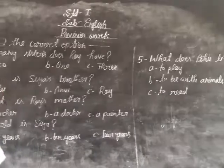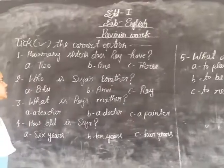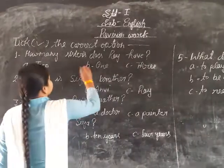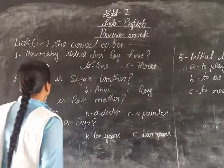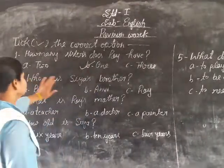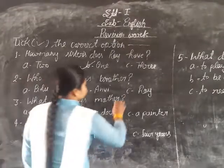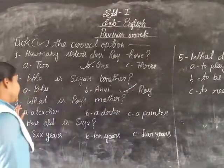So first, how many sisters does Roy have? Option B: 1. And second, who is Siya's brother? Option C: Roy.